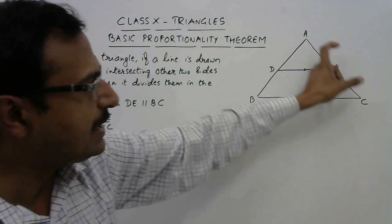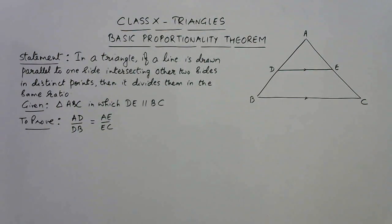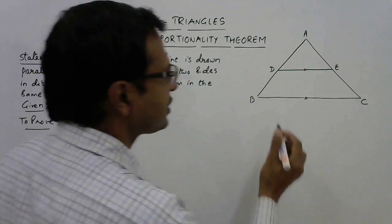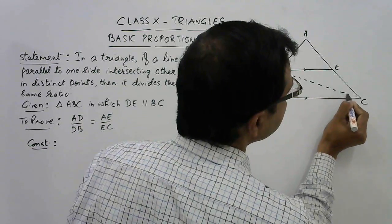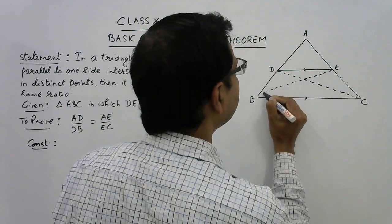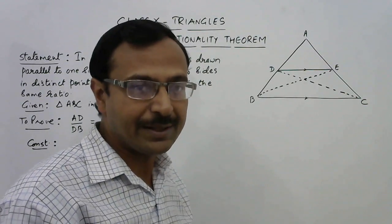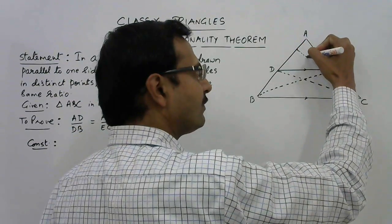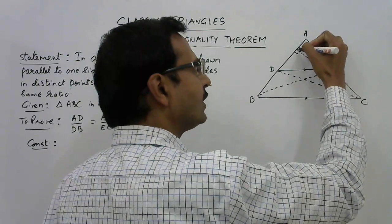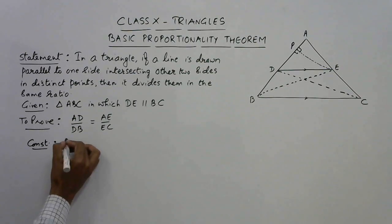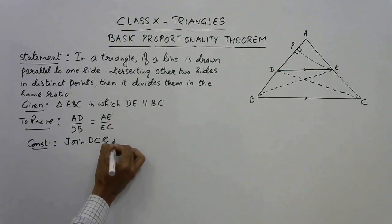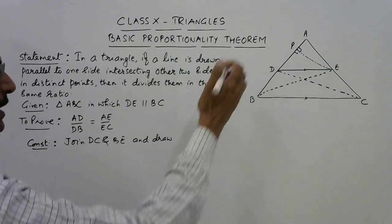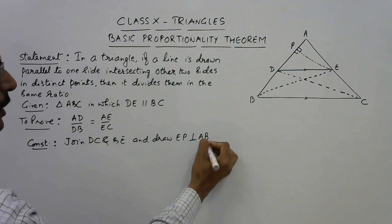That is, the ratio of AD and DB and AE and EC is the same. Now all the constructions involve helping lines. So let us draw some helping lines — construction. For the construction part, we need to join DC and EB. Just remember that whenever you draw helping lines, those lines have to be dotted, so as to make out that these are the construction part. And from E we draw a perpendicular on AB. This perpendicular is drawn from E on AB, and let us call this ET. So let us write the construction: join DC and BE, and draw EP perpendicular to AB.